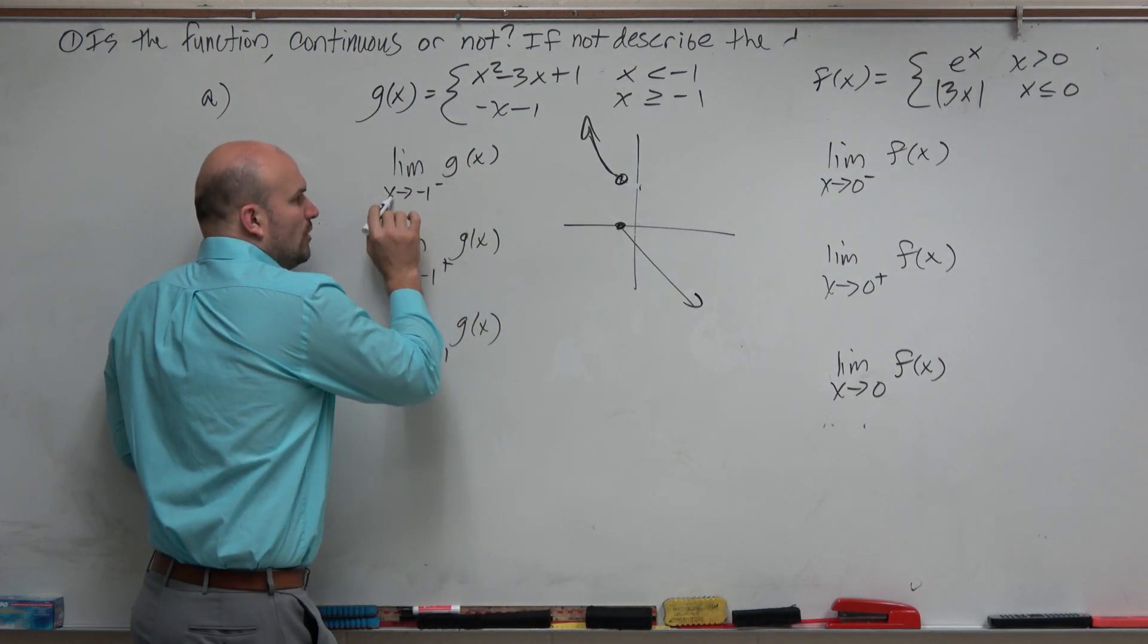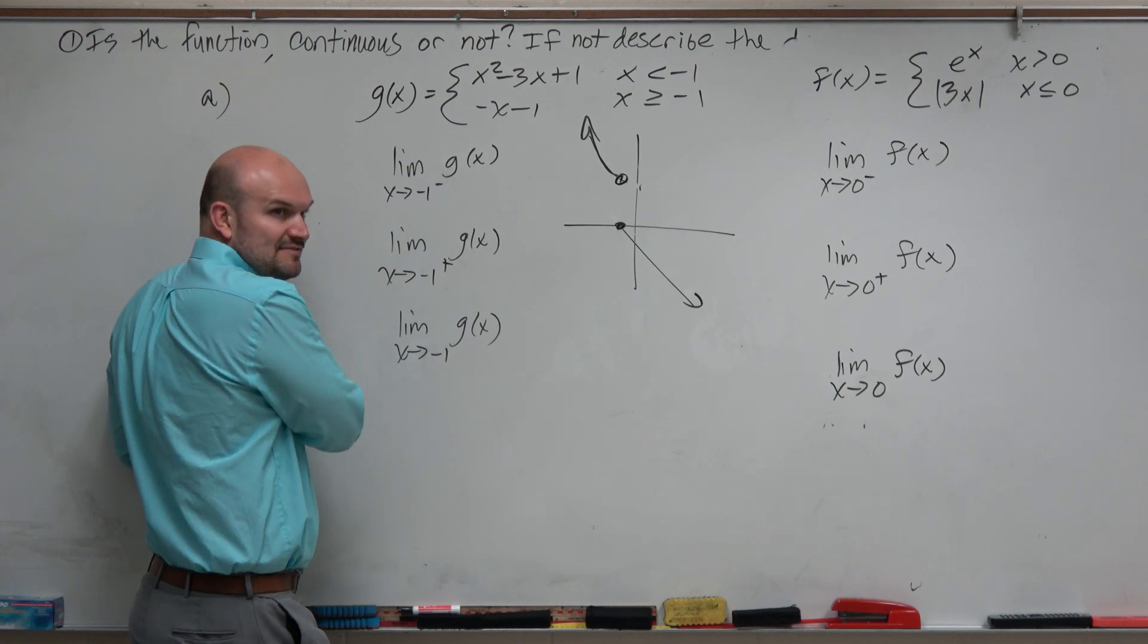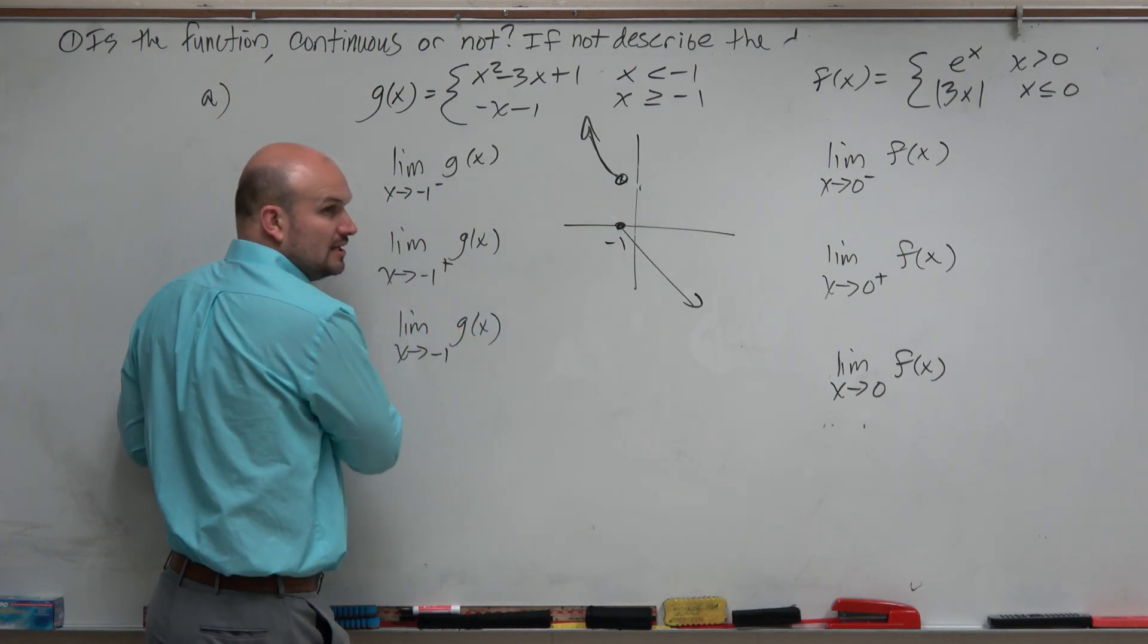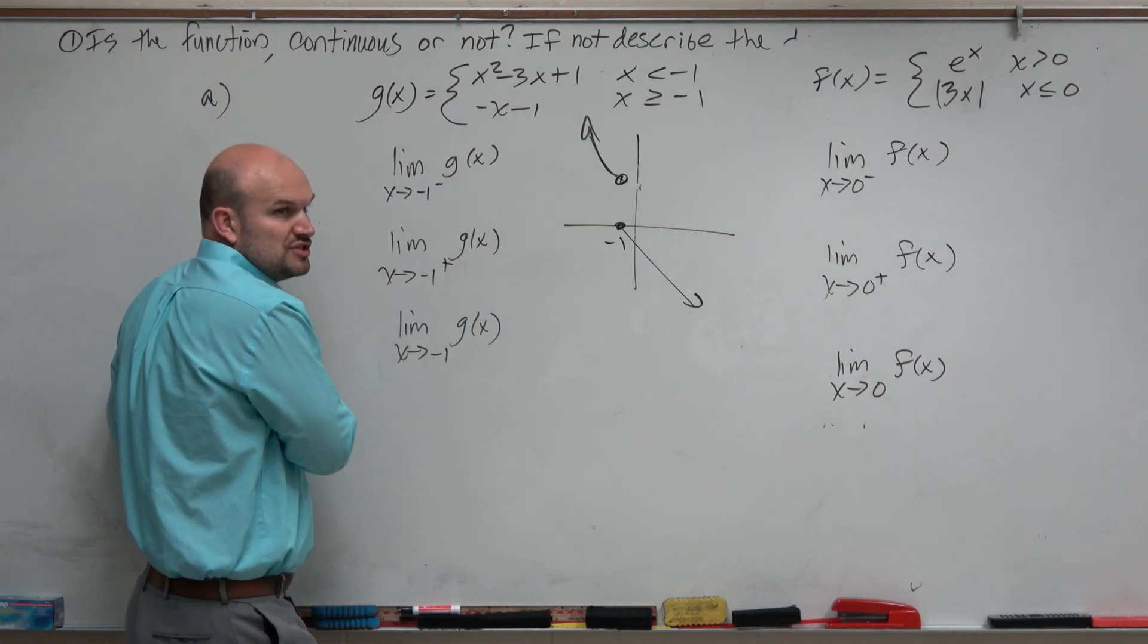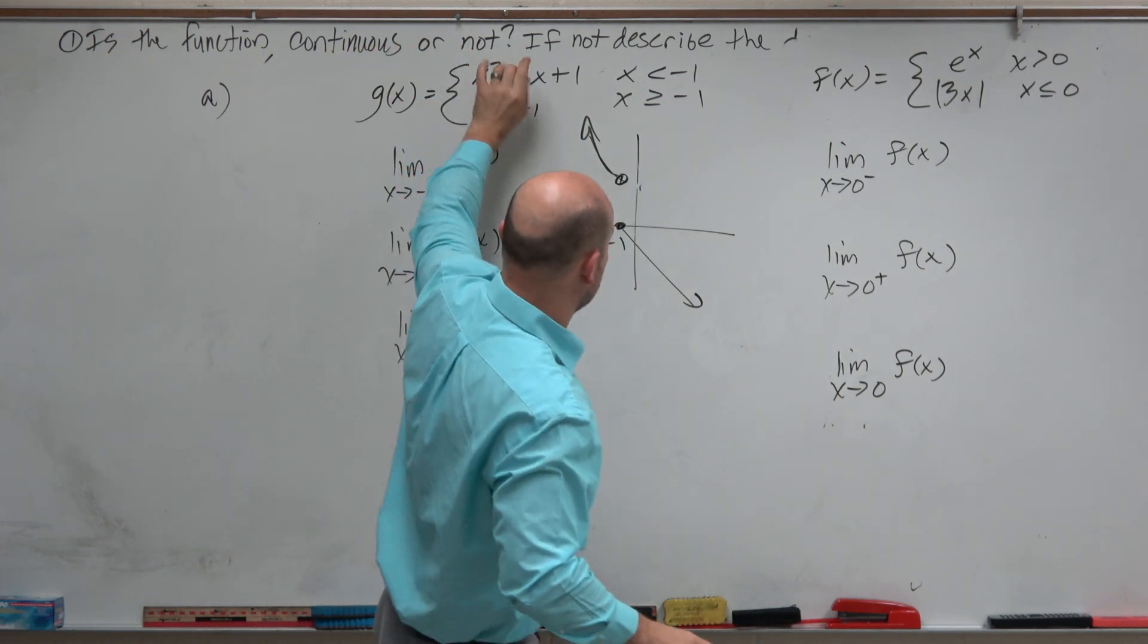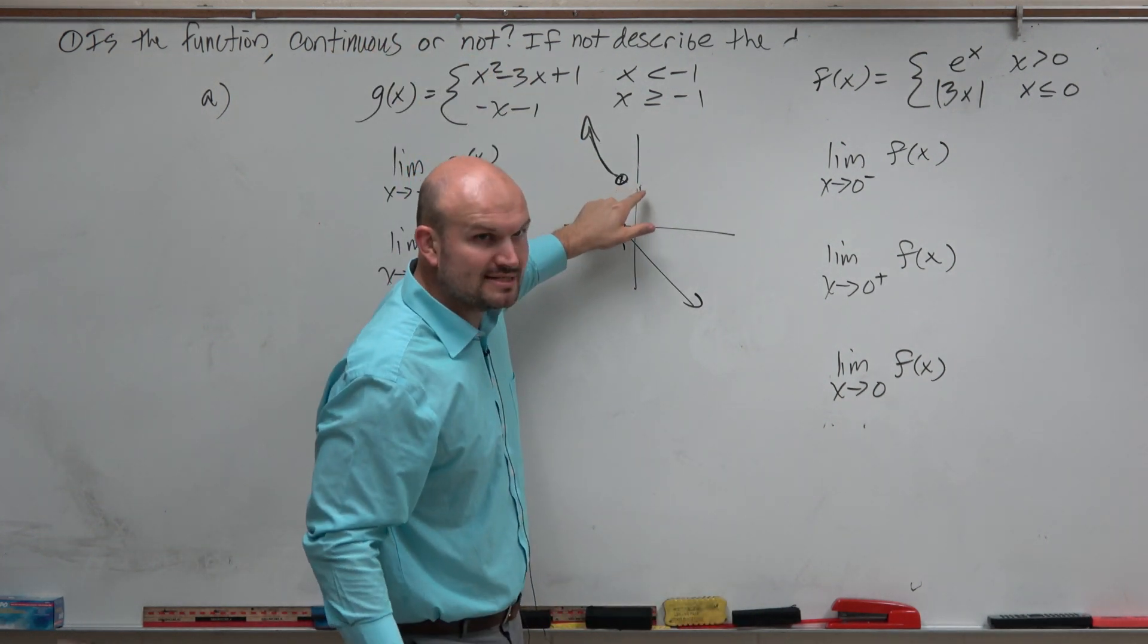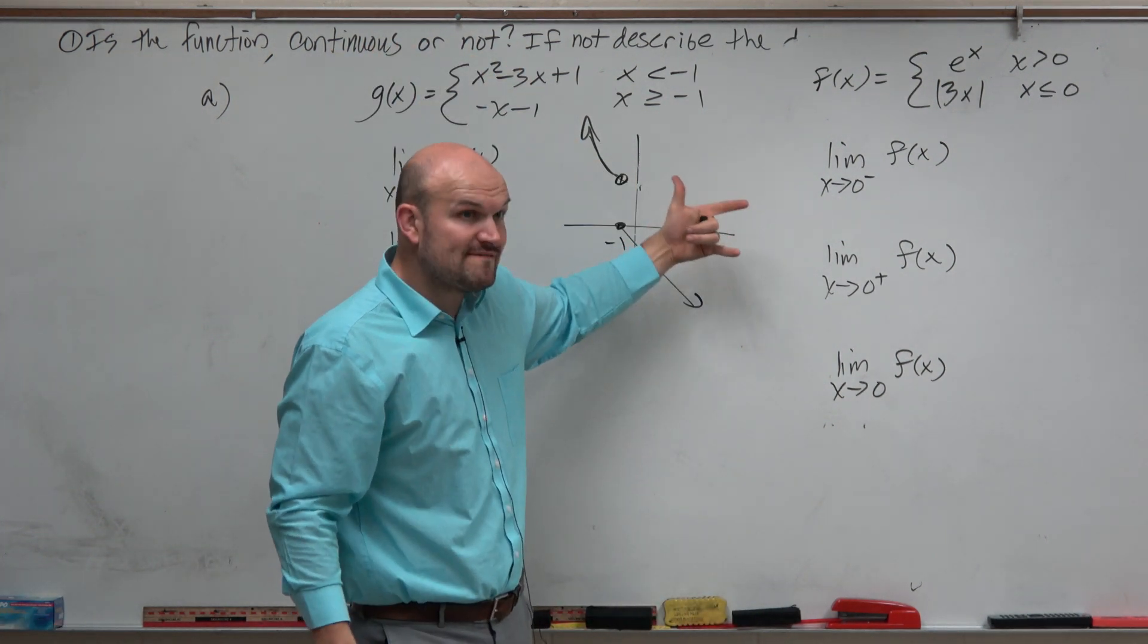The first one is asking what is the x value approaching from the left? When we're approaching negative 1, what is the y value we're approaching from the left? You look at the graph from your left hand and say, what is this y coordinate? We've got to figure out what that y value is.